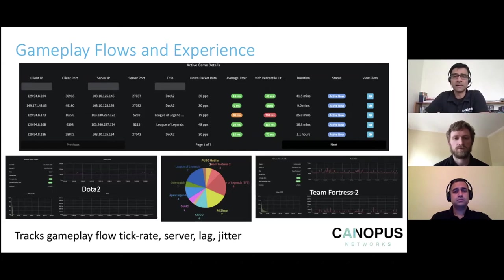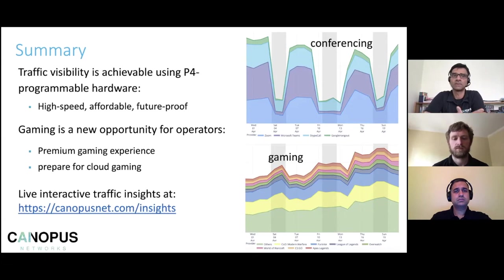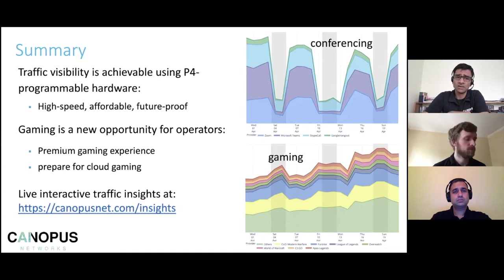This deep visibility helps operators really understand the gamer experience. When they get support calls from gamers complaining about poor experience, they can quickly identify where the server is, what path the traffic is taking, whether it's a server distance issue, an upstream problem, or congestion in their network. To summarize, we believe there's a huge opportunity to use the P4 programmable hardware ecosystem and supporting software like Stratum to deliver deep traffic visibility to network operators at a very affordable price compared to current DPI, which tends to be really expensive. The method of using the pulse of the flow is future-proofed and resistant to encryption.